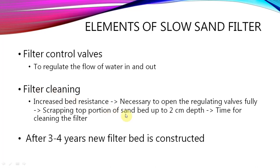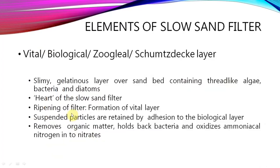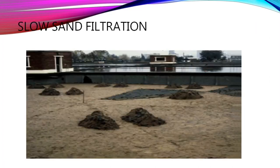Filter cleaning in slow sand filters is done by a process called scraping. When bed resistance is very high, we open the valves fully, drain the water, then scrape the top portion of sand up to 2 centimeters depth and replace it. After three to four years, a new filter bed is constructed. The top 2 to 3 centimeters of the old layer is removed and a new layer is placed for the next usage.